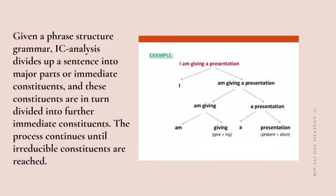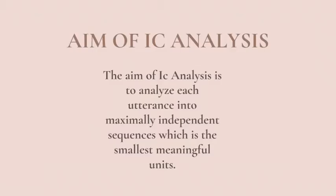Given a phrase structure grammar, IC Analysis divides up a sentence into major parts or immediate constituents, and these constituents are in turn divided into further immediate constituents. The process continues until irreducible constituents are reached. The aim of IC Analysis is to analyze each utterance into maximally independent sequences, which are the smallest meaningful units.